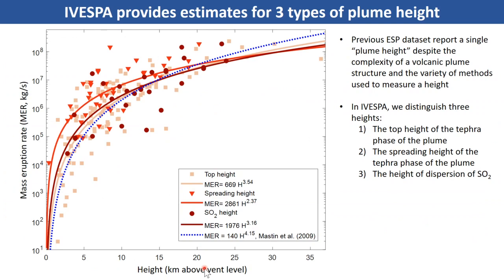Another new feature of iVespa that is particularly handy is that we provide estimates for three different types of plume height, whereas previous datasets provided only a single unspecified plume height. This figure shows the mass eruption rate as a function of one of these three heights. The light orange squares are the top height of the ash phase of the plume, orange triangles are the spreading height of the ash umbrella cloud, and dark red circles are the SO2 dispersion height. Each continuous line is a power law fit — the canonical empirical relationship used to relate plume height to mass eruption rate. For a fixed mass eruption rate, the top height tends to be higher than the spreading height, and the SO2 height falls somewhere in between.